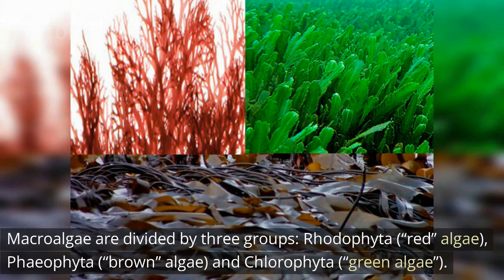Macroalgae are divided into three groups: Rhodophyta, red algae; Pheophyta, brown algae; and Chlorophyta, green algae.